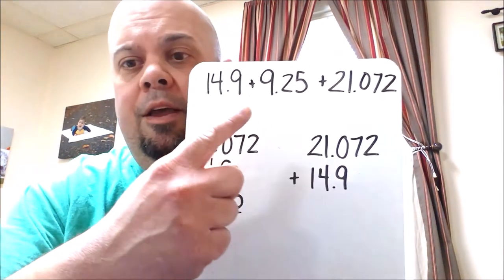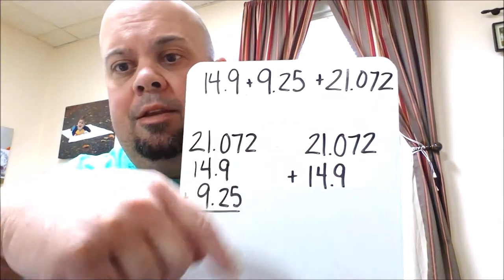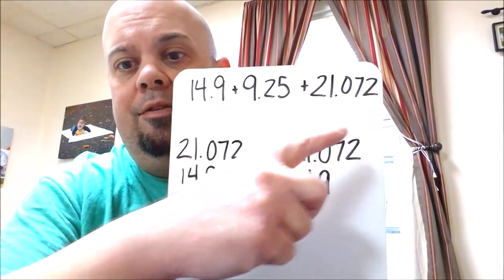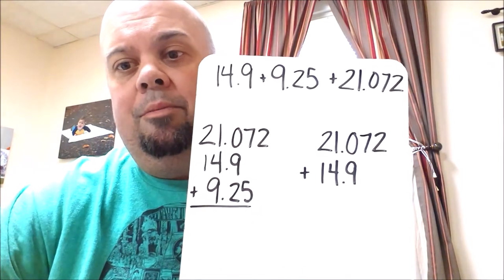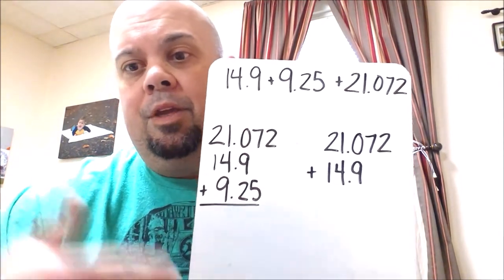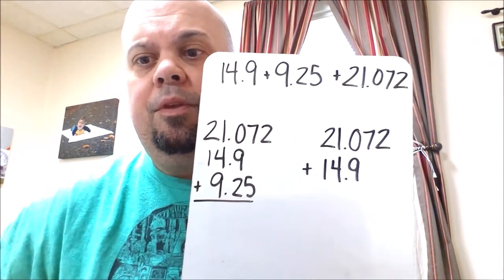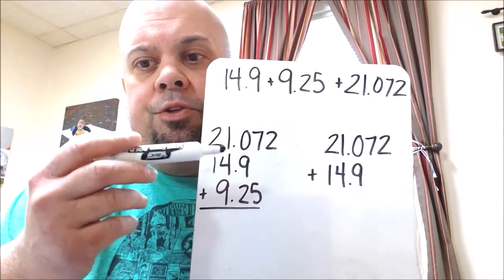So as you can tell all of these numbers end in different decimal places. So we get tenths, hundredths, and thousandths. So the problem is when you try to add them they don't really line up. So what you could do there's two ways to do this.